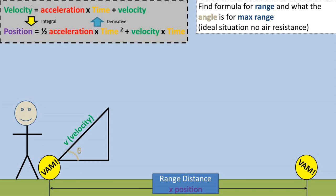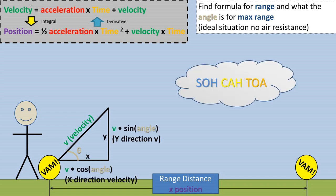We will be using the position equation and the velocity equation, which is useful to note that they are integrals and derivatives of one another. I have listed them on this slide. We will also be breaking down the velocity into x, or left to right direction, and y, or down to up direction, by completing Sokotoa. The cosine of the angle times the velocity equals the x velocity, and the sine of the angle times the velocity equals the y velocity. We are using the velocity of the initial condition.